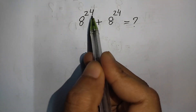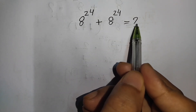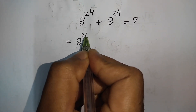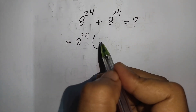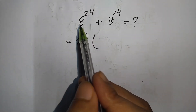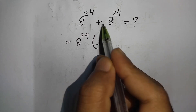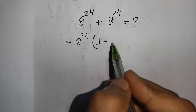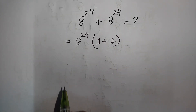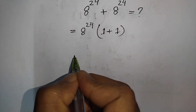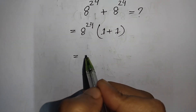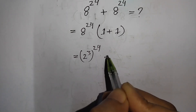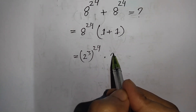How to simplify 8²⁴ plus 8²⁴. First, we take 8²⁴ as a common factor: 8²⁴ times (8²⁴ divided by 8²⁴ plus 1), which means 8²⁴ times 2. Since 8 equals 2³, we have 2³ raised to the 24, times 2, which is 2^(3×24) times 2¹.